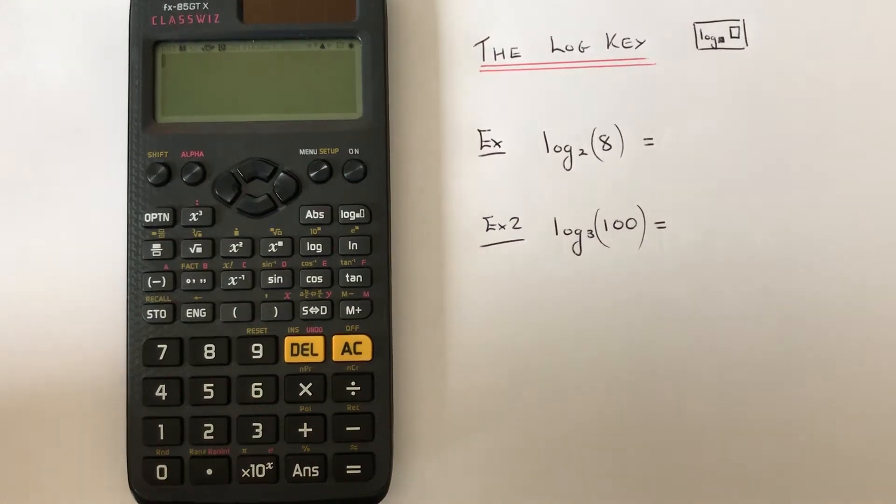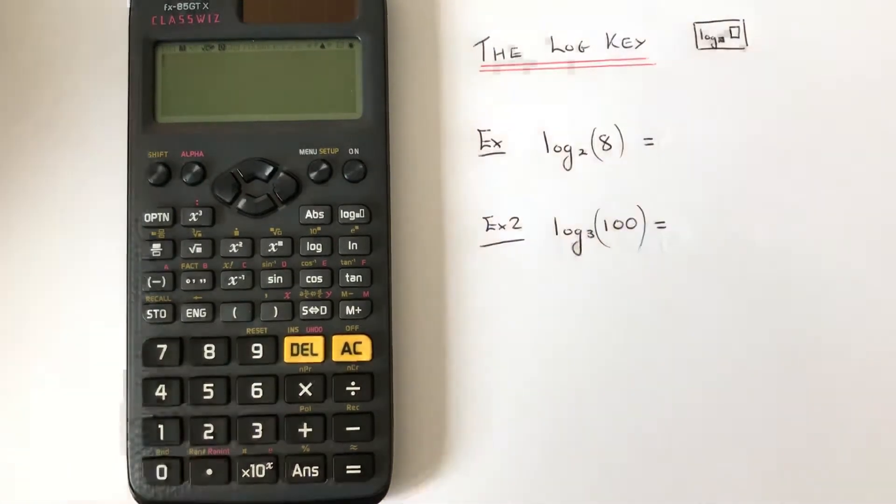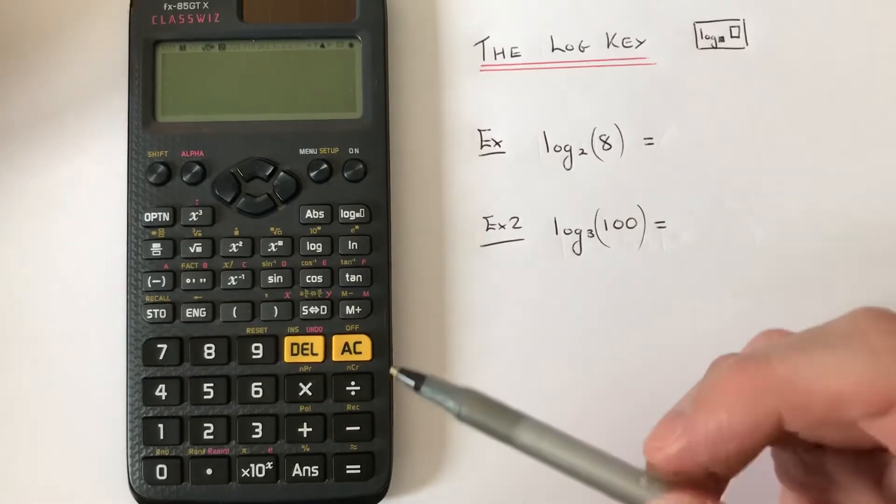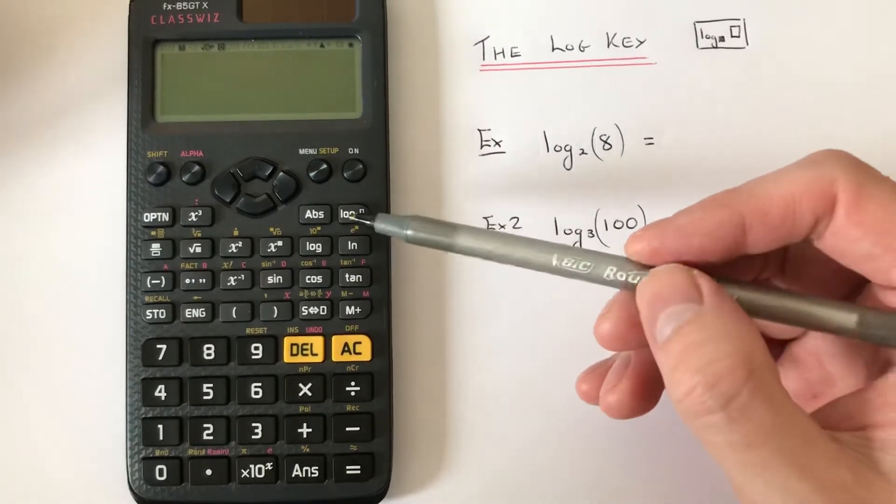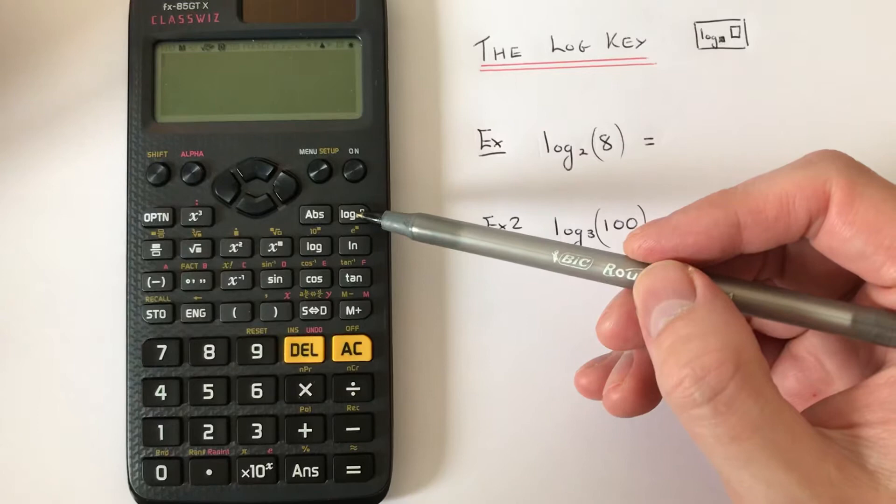Hi guys, welcome back. This is Maths 3000. So I'm going to show you how to use the log key on a Casio ClassWiz scientific calculator. The log key can be located on the first row of the scientific functions.